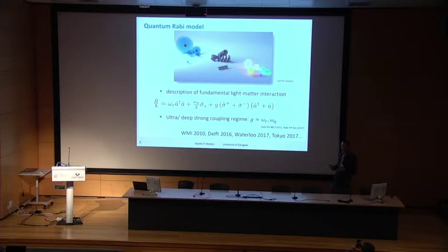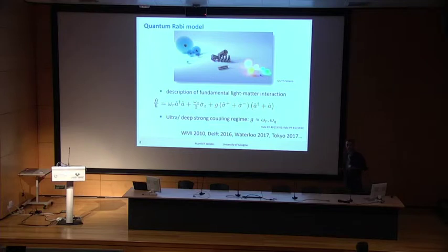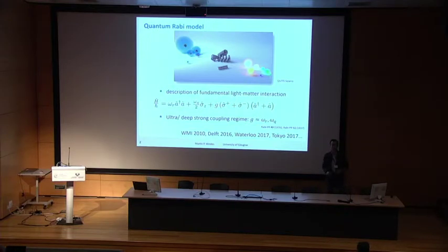If the coupling G is strong, ultra-strong, or even deep-strong — meaning G is on the same order as the transition frequencies of both quantum systems — then the energy diagram of the uncoupled system breaks down. You get new level structures and start having a strongly entangled system.